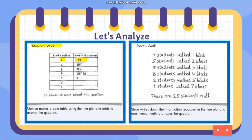Above five there are two, six is zero, and seven is one. So when she plotted the different data on the table: blocks walked one — four students; blocks walked two — five students; blocks walked three — five students; blocks walked four — eight students; blocks walked five — two students; six — zero; and seven — one student.